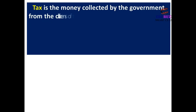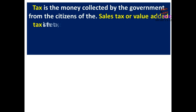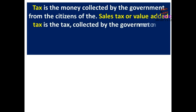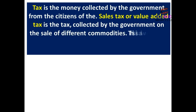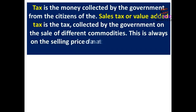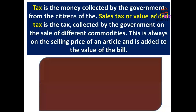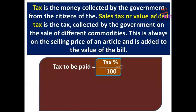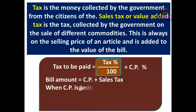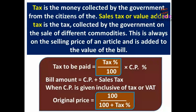Tax is the money collected by the government from citizens. Sales Tax or Value Added Tax (VAT) is the tax collected by the government on the sale of different commodities. It is always on the selling price and is added to the bill. Tax to be paid = (Tax% ÷ 100) × Cost Price. Bill amount = Cost Price + Sales Tax. When Cost Price is inclusive of tax, Original Price = (100 ÷ (100 + Tax%)) × Cost Price.